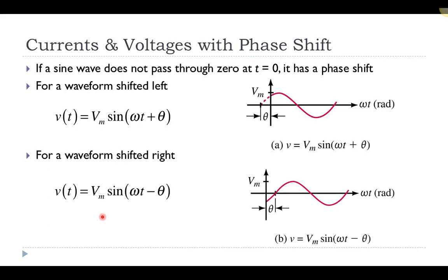If the waveform is shifted to the right — the zero crossing is not at the origin but displaced by angle θ — I write the voltage as the maximum times sine of ωt minus θ. Plugging in t equal to zero gives sine of negative θ, which for angles between 0 and 90° equals negative sine θ, giving a negative voltage at t equal to zero — exactly what's shown. So a left shift gives a positive phase angle, and a right shift gives a negative phase angle.